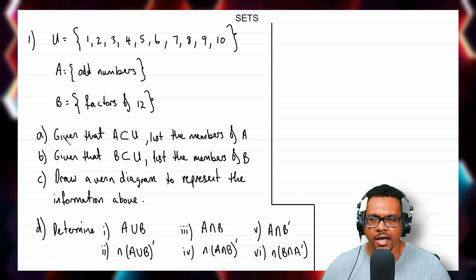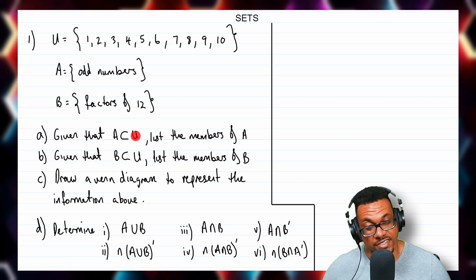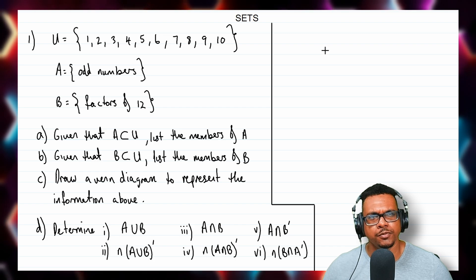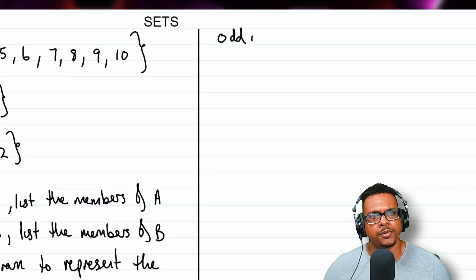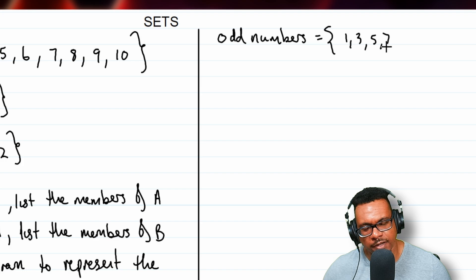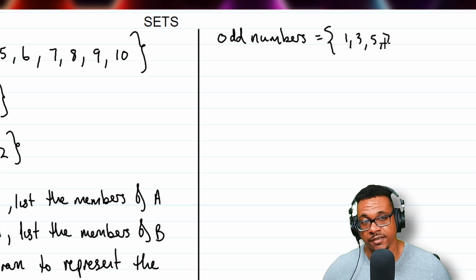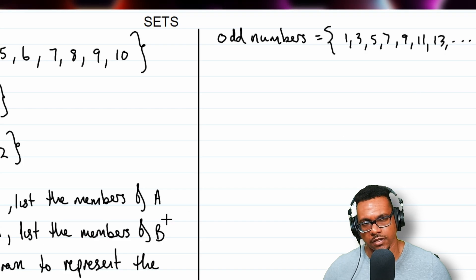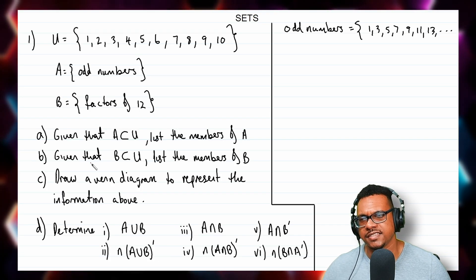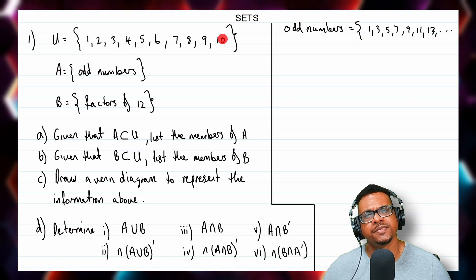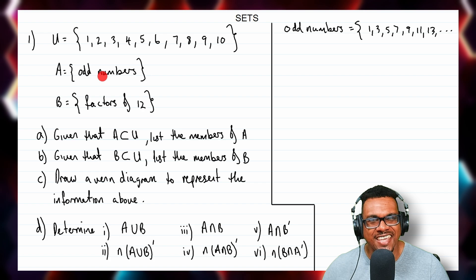For part A, given that A is a subset of the universal set, we want to list the members of A. Odd numbers are numbers that when you divide by 2 you get a remainder: 1, 3, 5, 7, 9, 11, 13, and so on. Since A is a subset of the universal set which only goes up to 10, set A cannot exceed 10.